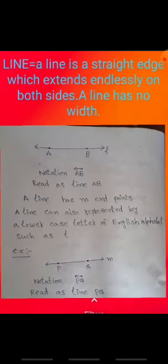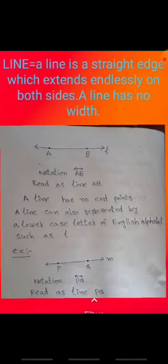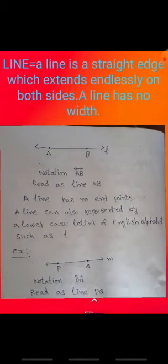Line. A line is a straight edge which extends endlessly on both sides. A line has no width and no endpoints — both sides are endless points. See points A and B: notation is AB with a line symbol, read as 'line AB'. A line can also be represented by a lowercase letter such as L. For example, line PQ: notation is PQ, read as 'line PQ'.